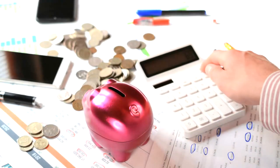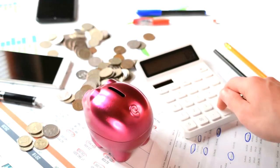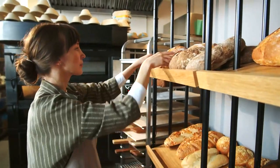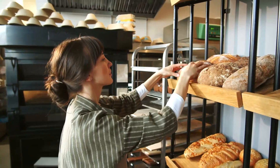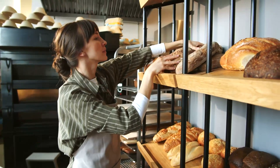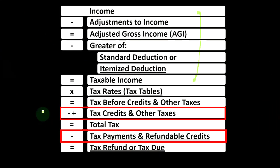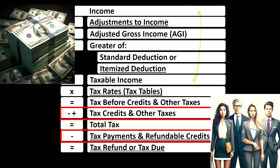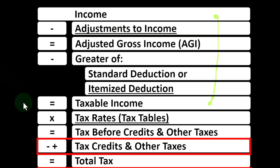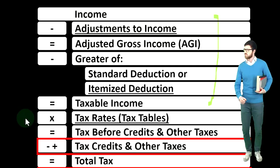Finally, we're at the credit location below, along with other taxes like self-employment tax. Then we deal with payments — estimated tax payments or withholdings — to get to the tax refund or tax due. Note that credits are similar to deductions in that we like them both, but if we can get a dollar credit or a dollar deduction, we typically want the dollar credit because we usually get the full dollar worth of benefit, as opposed to the dollar deduction, which just decreases taxable income, the benefit being dependent upon our tax rate.